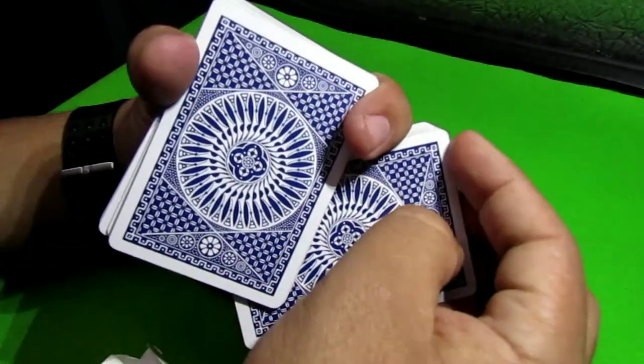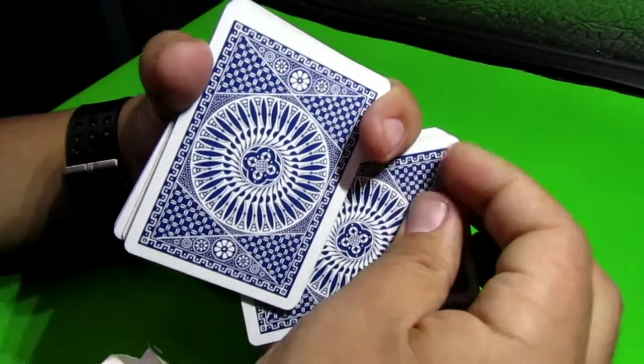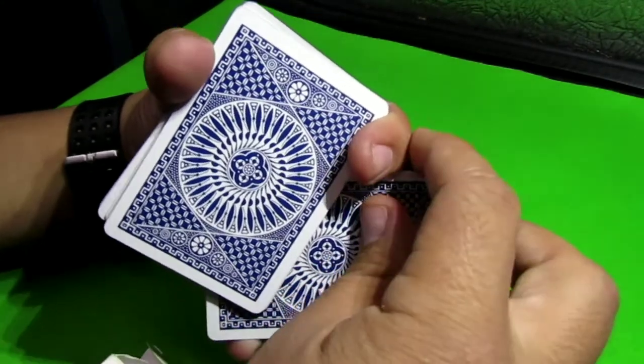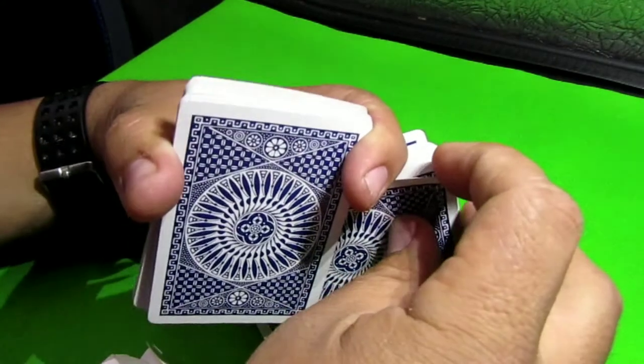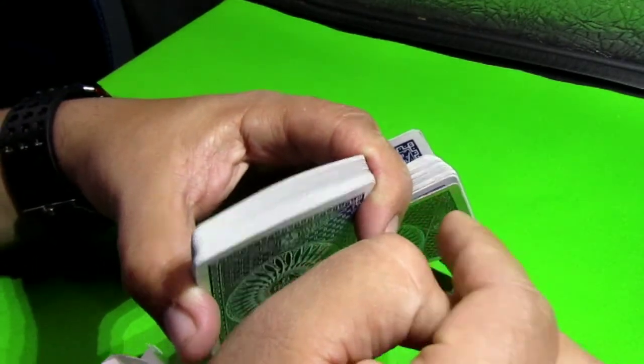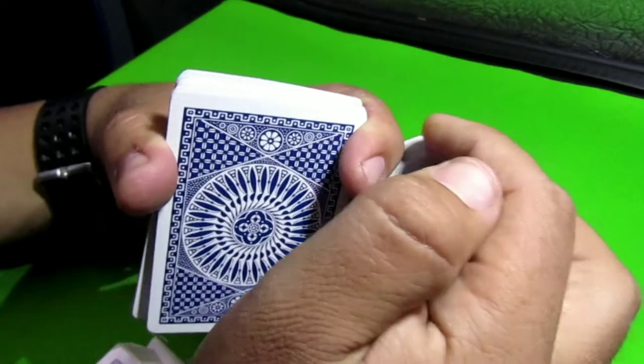Index finger helps to bowl the cards. Now this is the part where it could go, it could get funky. Because if your card catches your knuckle the wrong way, it'll start to bend your cards right there. That's what you don't want.